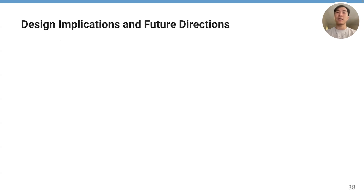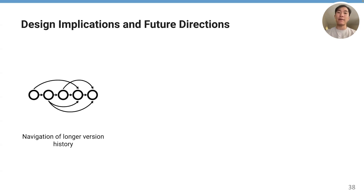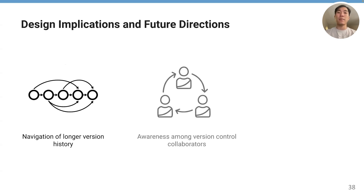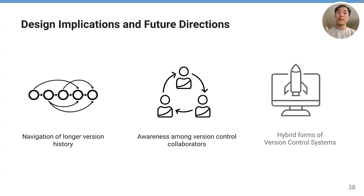Finally, let's discuss some design implications for future researchers building version control systems in VR. First, navigating longer history can be challenging using existing interactions — future work could investigate techniques such as more sophisticated clustering methods or incorporating different levels of resolution of the history graph. Second, we recommend providing swift communication channels without breaking the user's current working context, such as using portals, and providing shared understanding among collaborators, such as using shared history visualization. Finally, since many aspects of producing VR content take place outside of immersive environments — such as programming and debugging — future research could explore a hybrid form of version control that bridges both the inside and outside of VR.